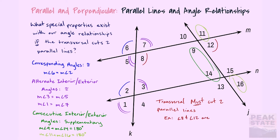This transversal must cut through two parallel lines — if it doesn't, we don't really know anything about the angles. For example, angles eight and twelve are corresponding, but because lines k and j are not parallel, we don't know anything special about those two angles in relationship to each other.